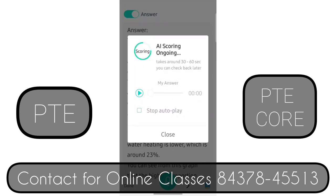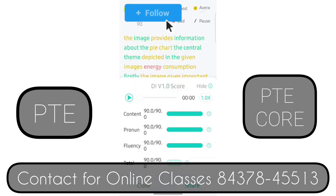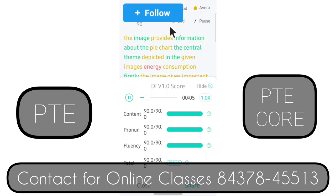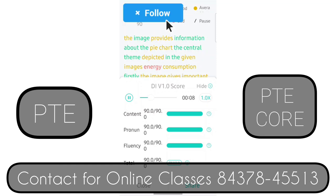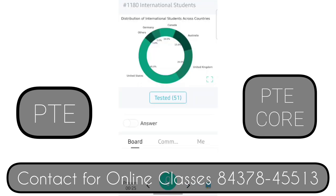The image provides information about the pie chart. The central theme depicted in the given image is energy consumption. Firstly, the image gives important information about water heating and other appliances.